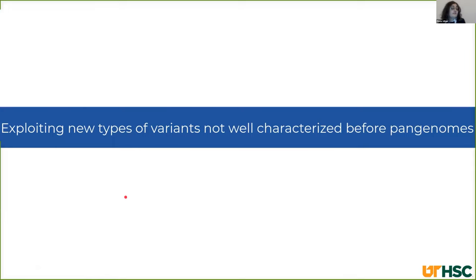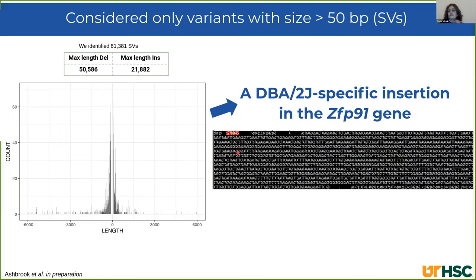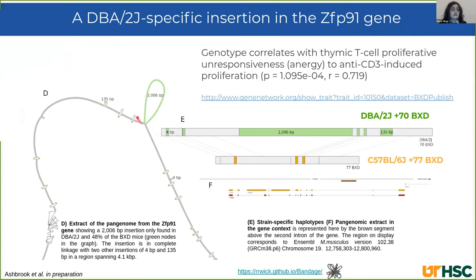The aim of the pangenome is identifying new types of variants, or variants not well characterized before pangenomes. For this, I considered only variants with sizes of 50 base pairs or more, treating them as structural variants. This is the distribution of lengths and the total number of structural variants identified, as well as the maximum length for deletions and insertions.